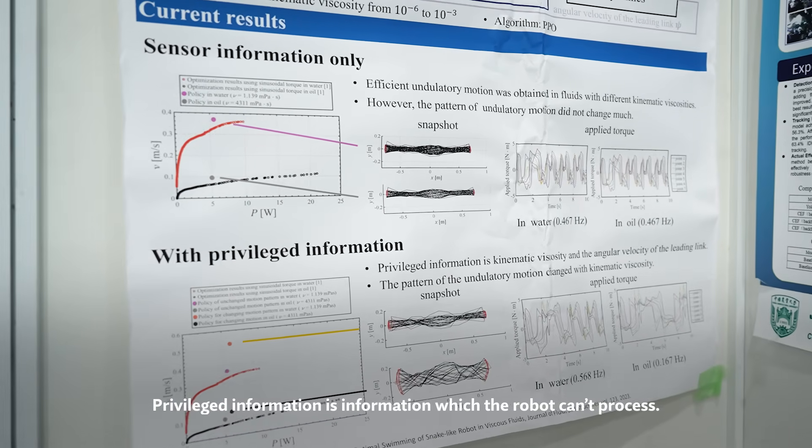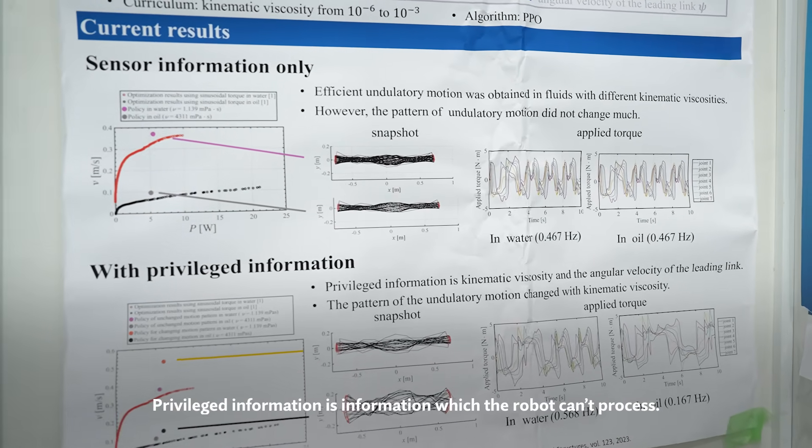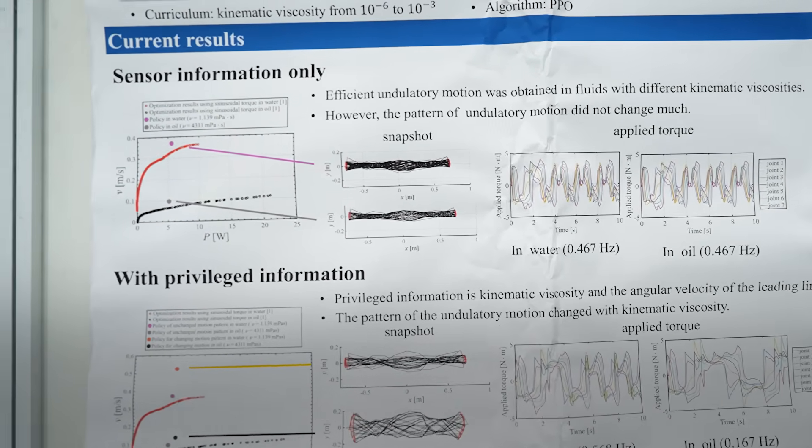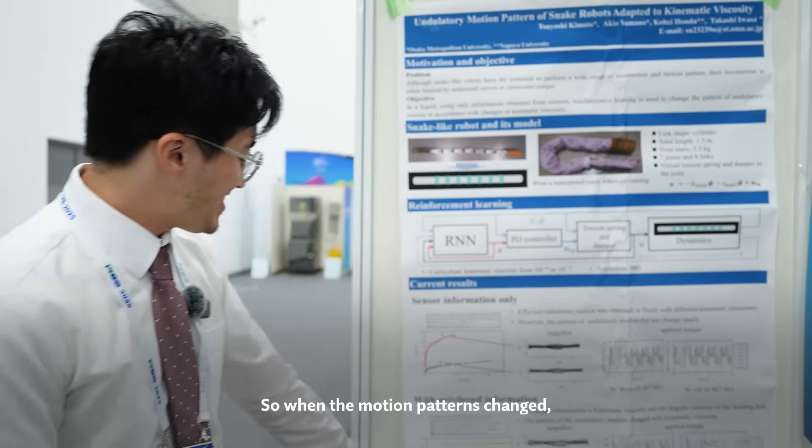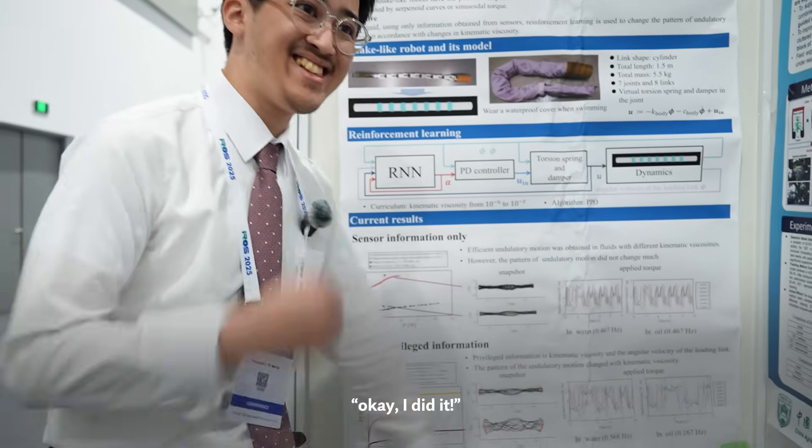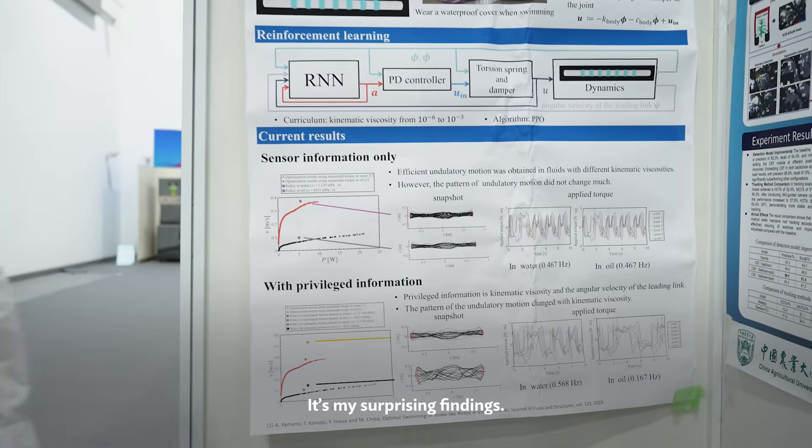Proprioceptive information is information which the robot cannot directly observe externally, so it is a difficult aspect. So when the motion pattern changed, okay, I did it. It's my surprising finding.